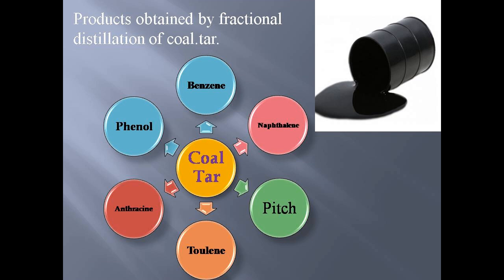Different products are obtained by fractional distillation of coal tar. When coal tar is subjected to fractional distillation, various products are obtained like benzene, naphthalene, toluene, anthracene, and phenol. The residue left after this fractional distillation is pitch.